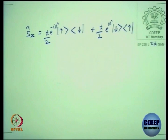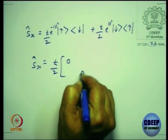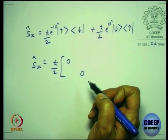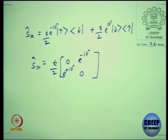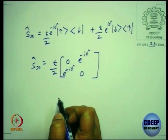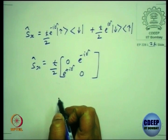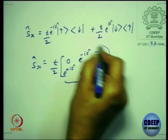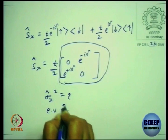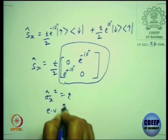What will this be in matrix form? Taking ℏ/2 out, the diagonal is 0, and the off-diagonal elements are the other way. So it is again traceless. What about the square of these matrices? The eigenvalue is ±1 for this matrix. Check it — call that matrix sigma x, find its eigenvalues.